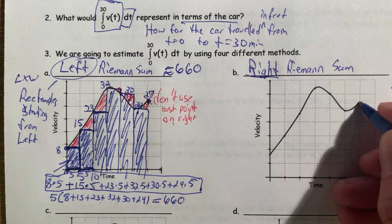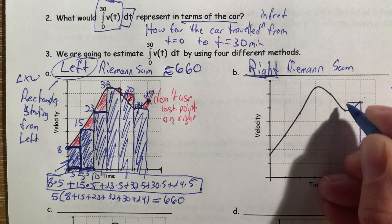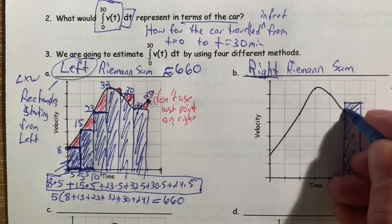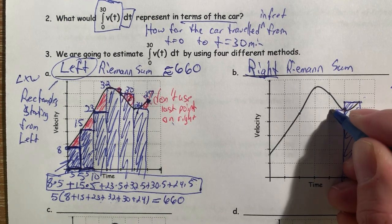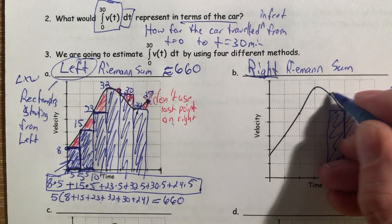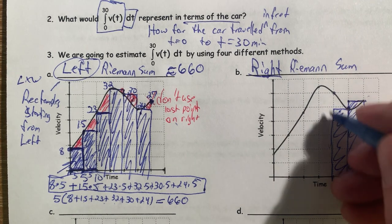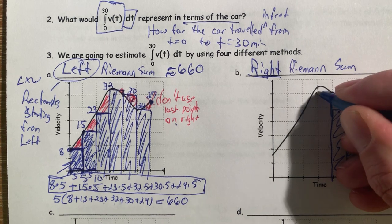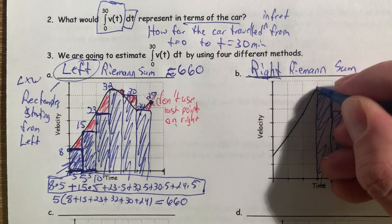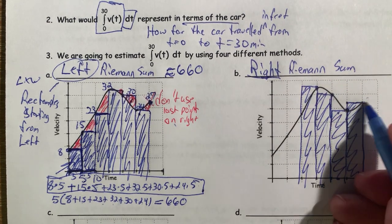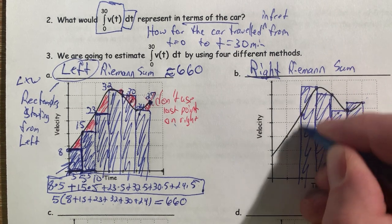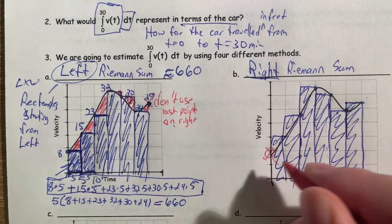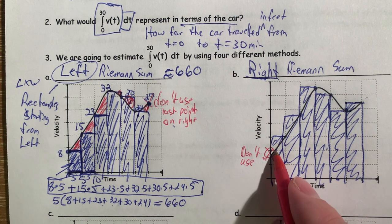We start with the rightmost data point and drop a line straight down to make a rectangle. Just like before we go over, but now we're going to the left until we get to our next data point. As soon as we get there, we end our rectangle. The rectangles will always touch the curve on their right side. We continue: drop it down, go over, drop it down. You'll notice that we don't use the leftmost data point because there's no rectangle to make out of it.